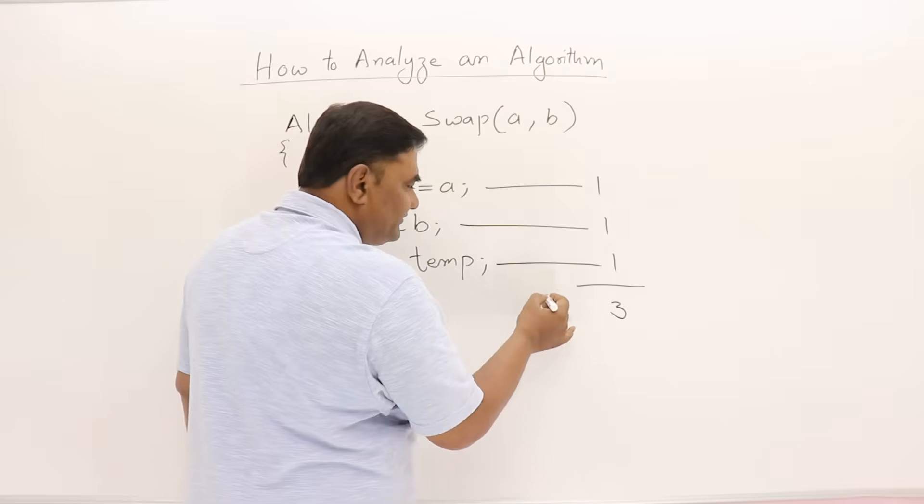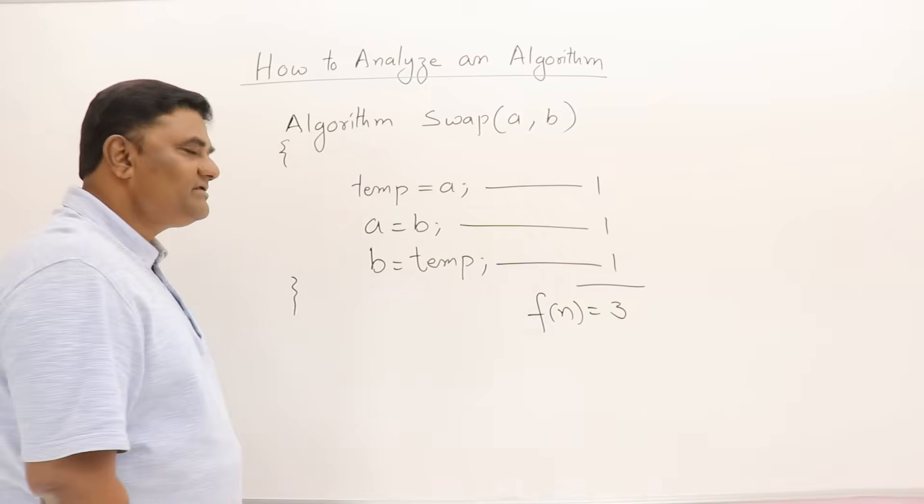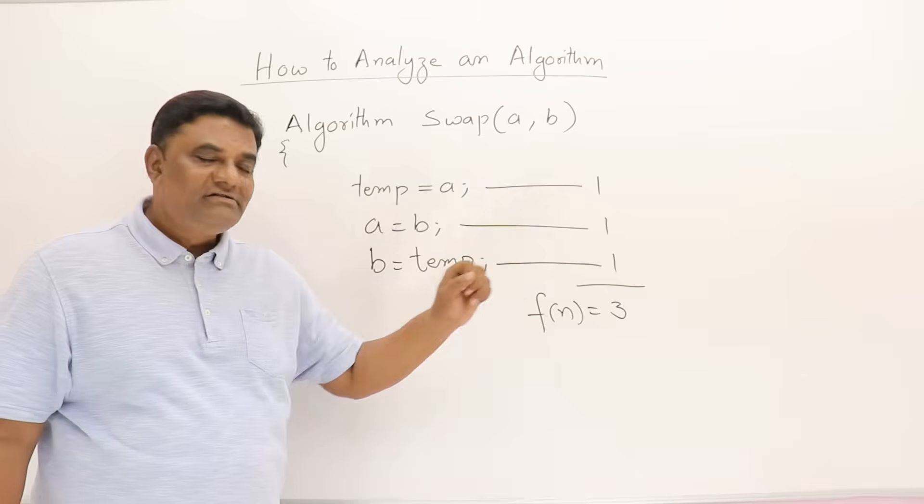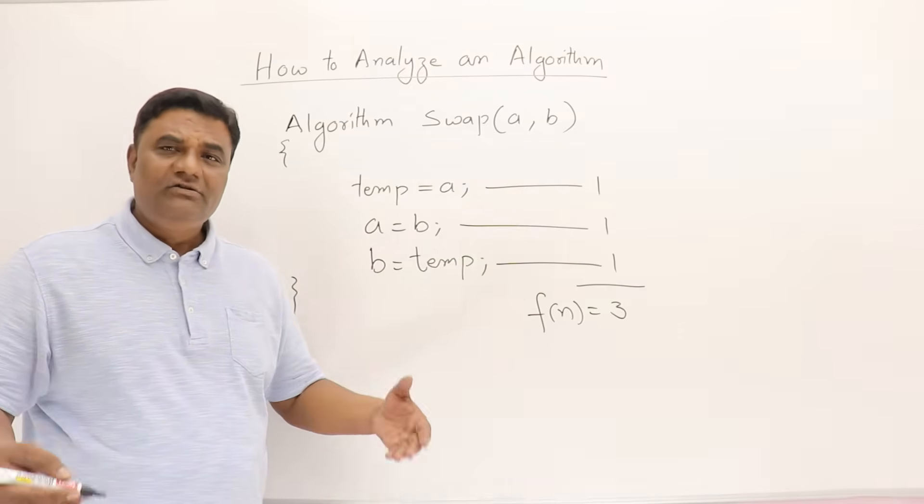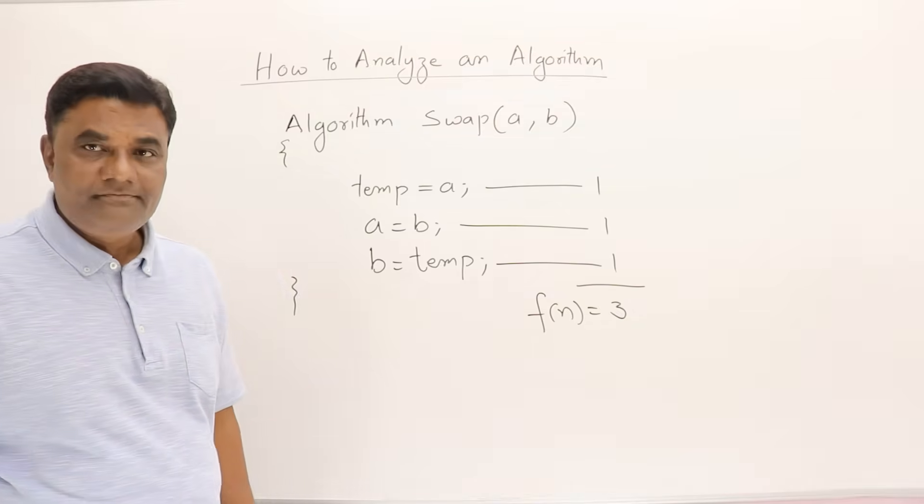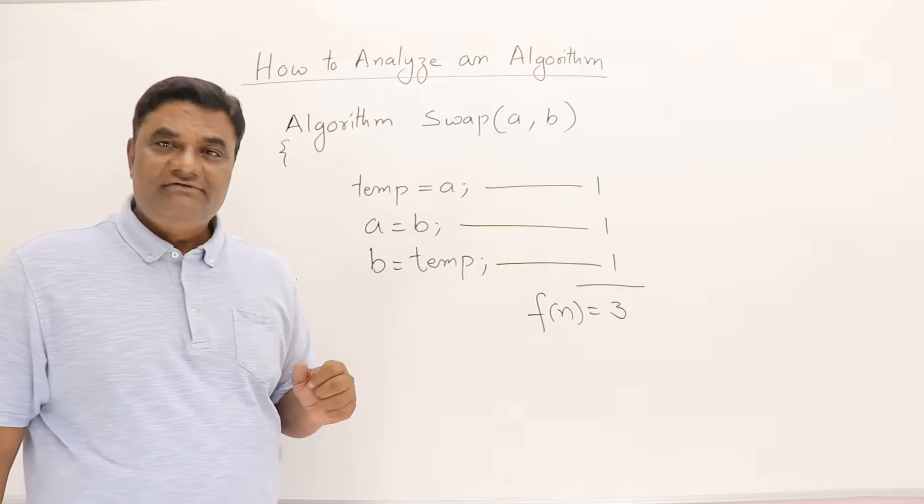So the time function f(n) is 3. Here we got the constant value because I have taken a very simple algorithm, and the answer is 3—a constant value, a fixed value we got. So there's a time function, but it's not in terms of n; just we got a constant value.